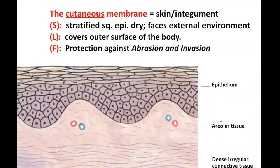The cutaneous membrane is a stratified squamous epithelial keratinized, facing the external environment, and that's protecting against abrasion and invasion — meaning that if you scrape this or rub up against stuff, it won't just fall off and damage the underlying tissue. The cutaneous membrane is confined to the skin, basically the outside of your skin.